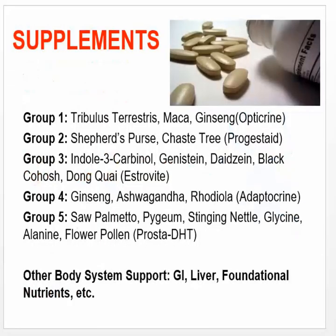There are all sorts of different supplements available. Group one — tribulus, maca, and ginseng — are helpful for increasing testosterone. Group two — shepherd's purse and chaste tree — are particularly important for women to help increase progesterone levels. Group three contains substances that help the liver break down estrogen when recycling is the issue. Ginseng, ashwagandha, and rhodiola are herbs that help with adrenals. Saw palmetto, stinging nettle, and flower pollen are great for the prostate.